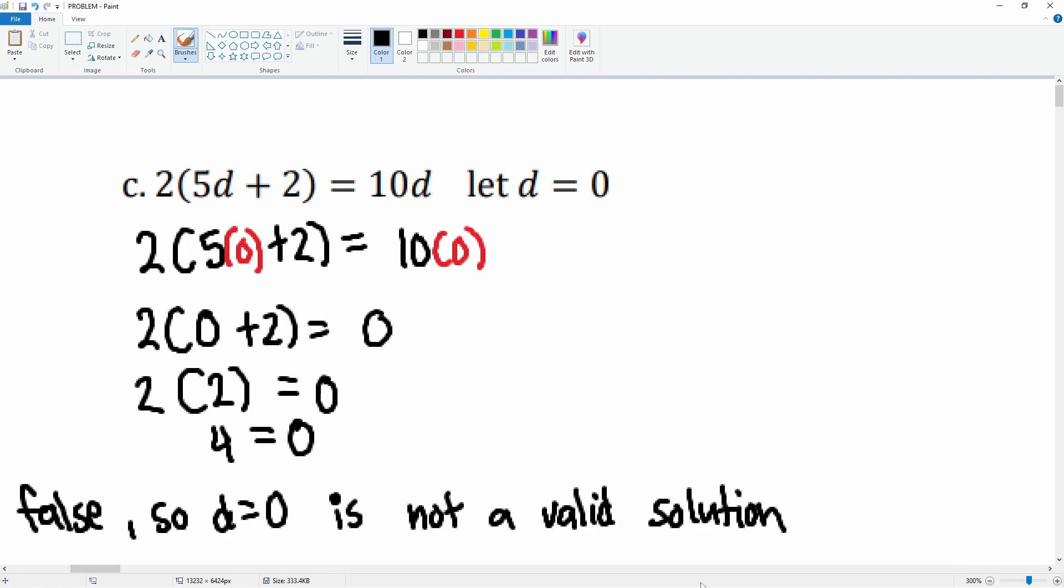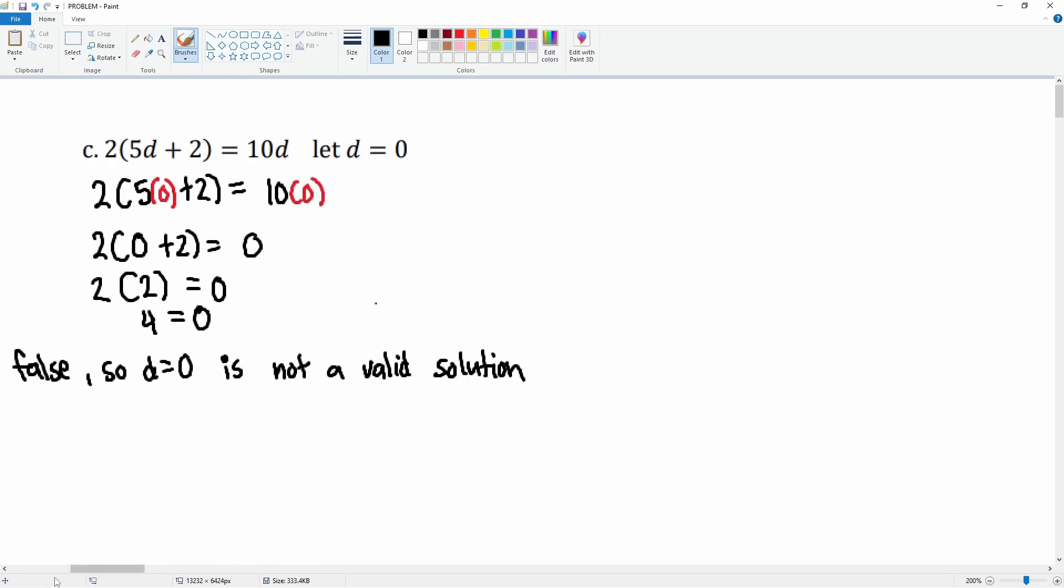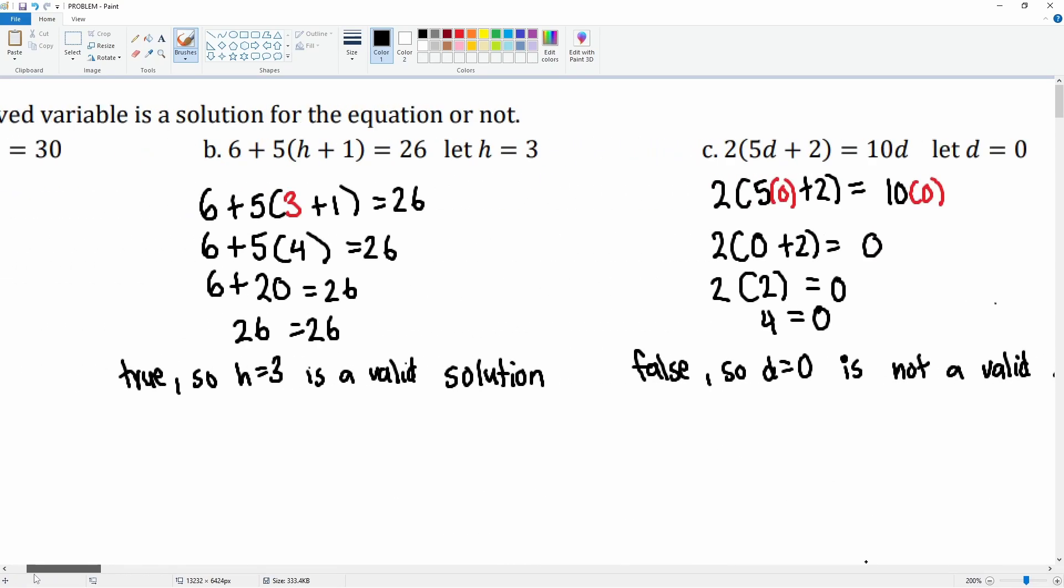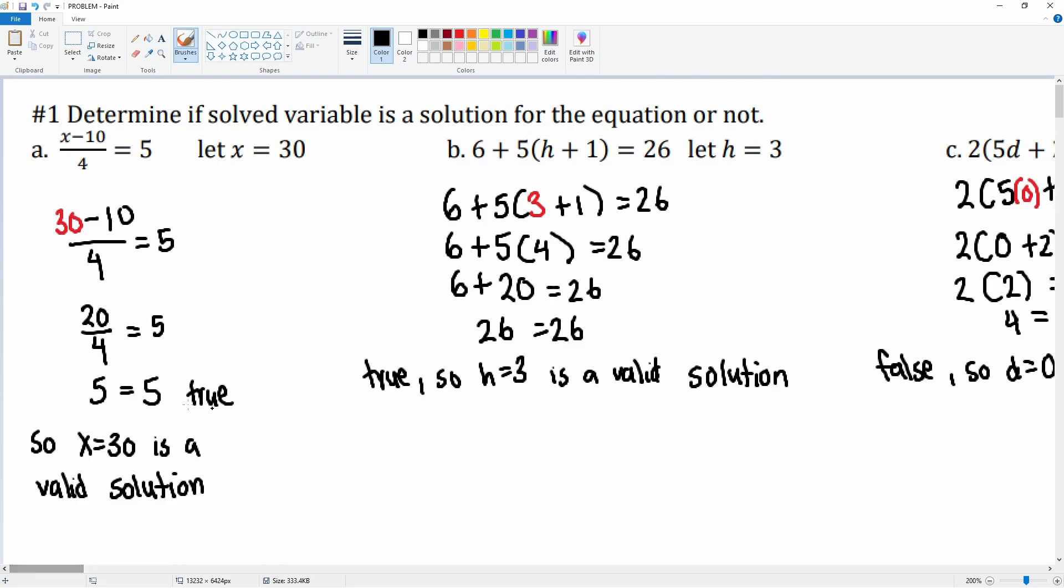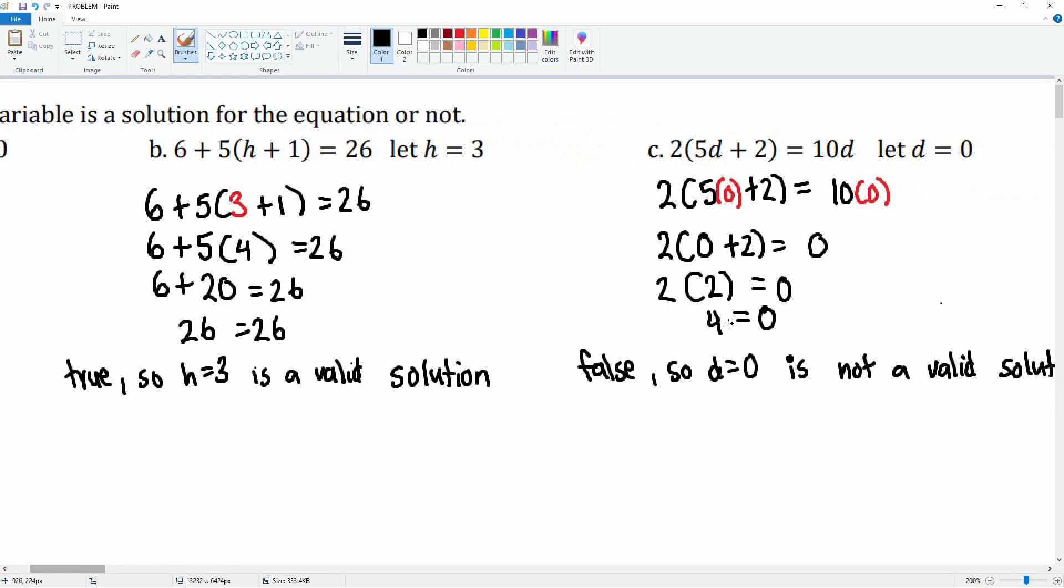Okay? There you go. Make this substitution, then simplify and see if the left hand side equals the right hand side. If the left side equals the right hand side, it is considered true and a valid solution. If the left hand side is not equal to the right hand side, it's false. It's not a valid solution.